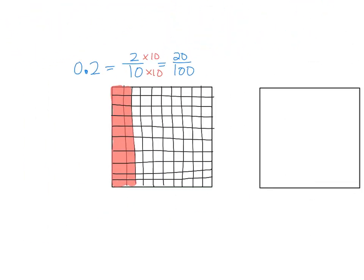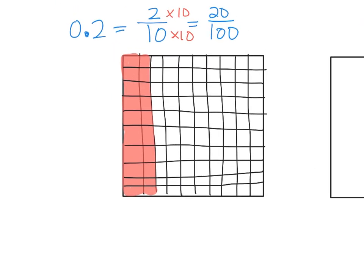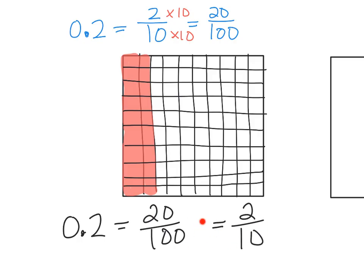We can also reverse that procedure. We can start with twenty hundredths and find its relationship back to two tenths. We can divide both the numerator and denominator by ten: twenty divided by ten is two, and one hundred divided by ten is ten — giving us two tenths. So we can find equivalence by multiplying both the numerator and denominator by ten, or by dividing both by ten. That's a really powerful technique.